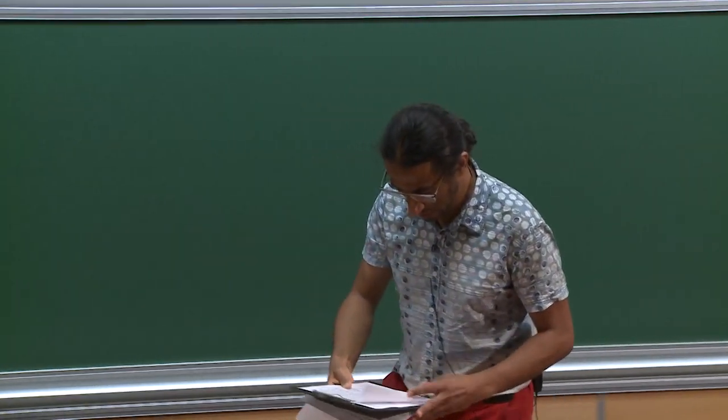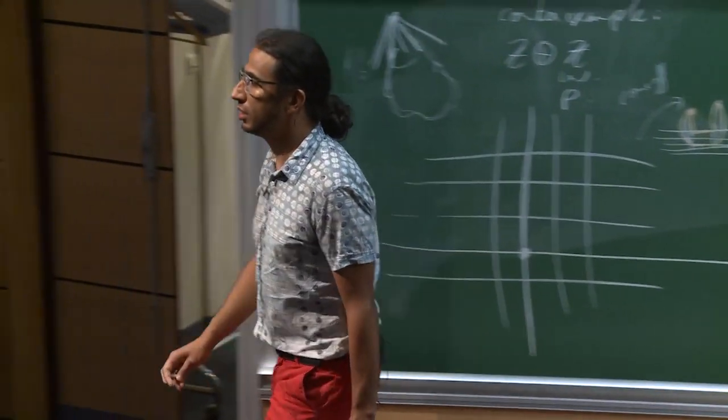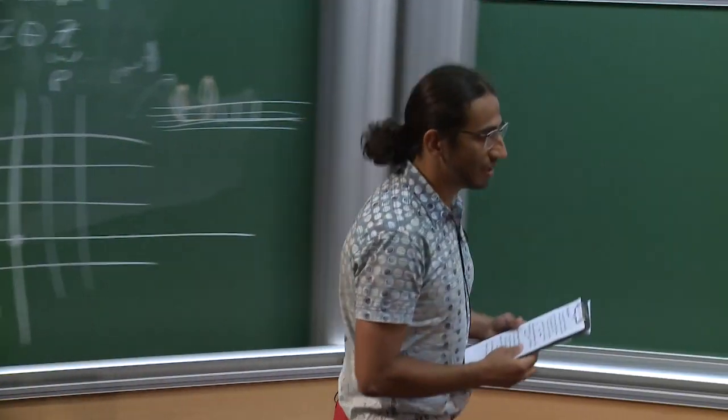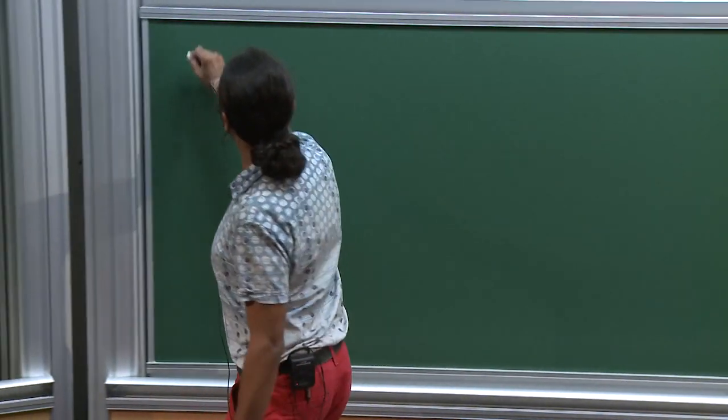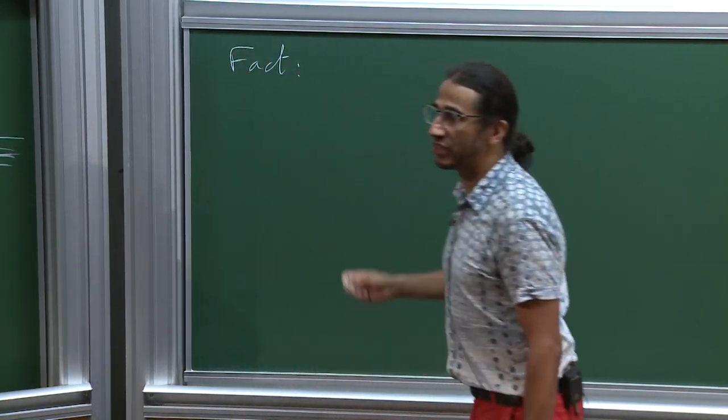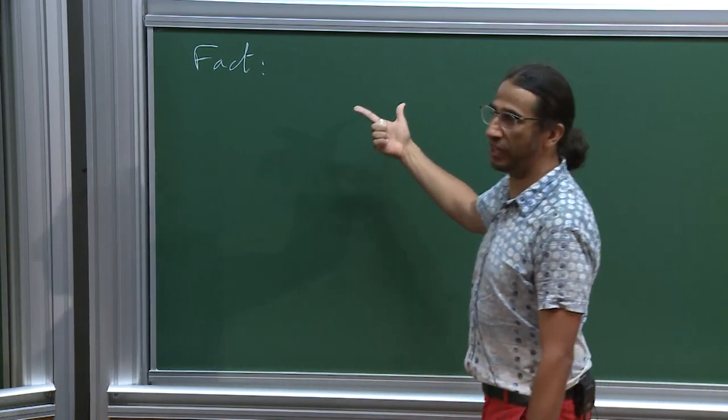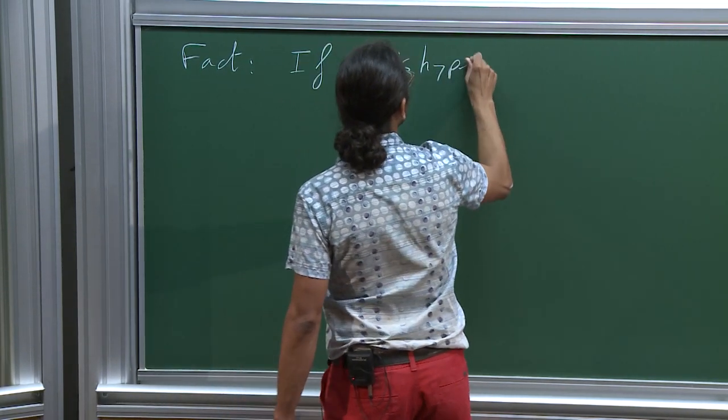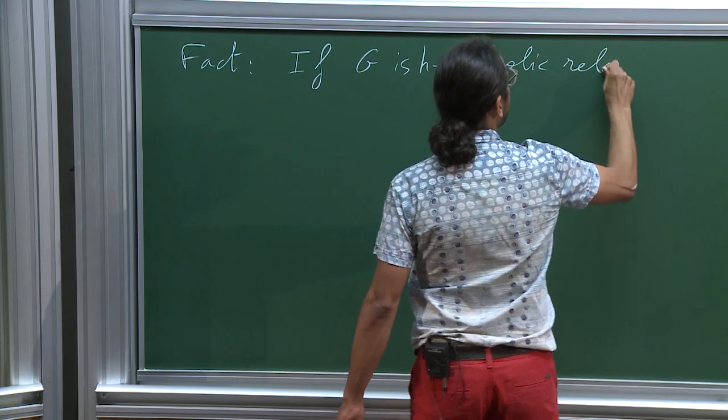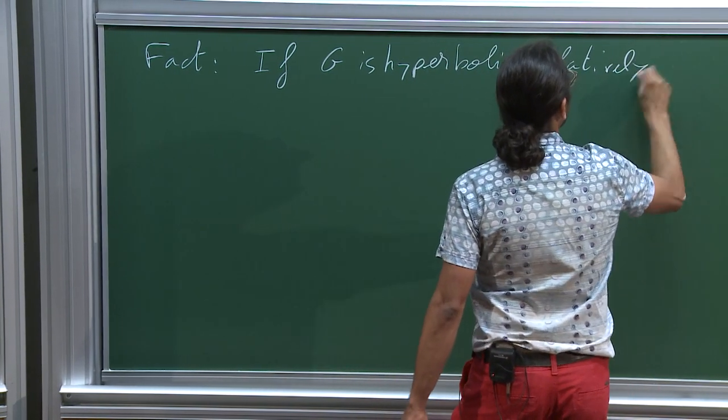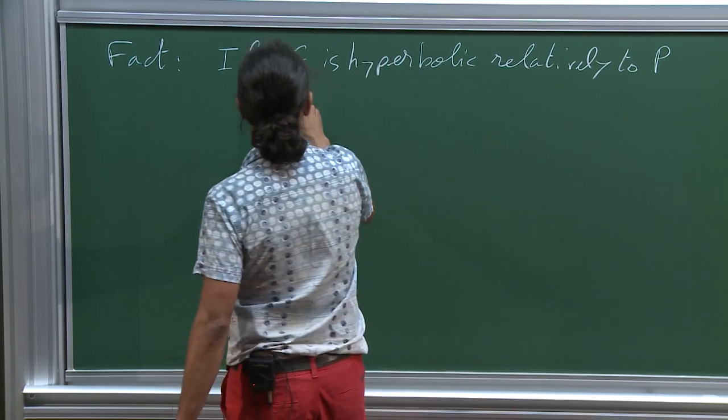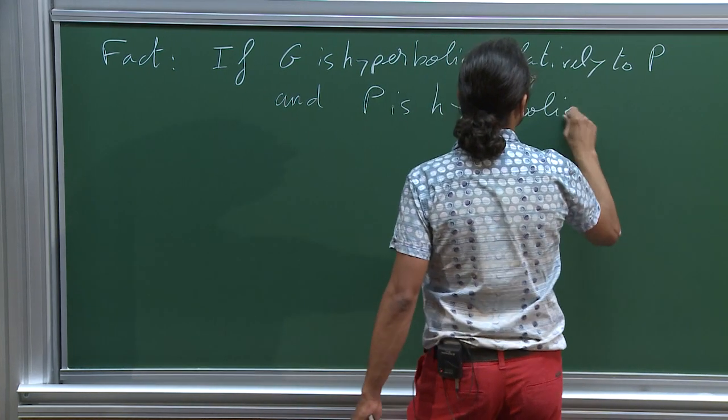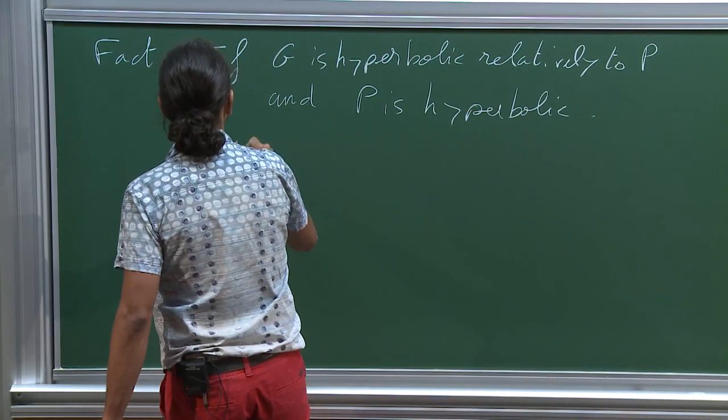There is fact that I use twice in two sentences. If G is hyperbolic, relatively to P, and P is hyperbolic, then G is hyperbolic. I believe the first time, this fact is due to Osin, in this level of generality.